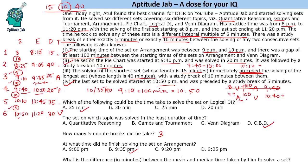What is the difference between the mean and the median time taken by him to solve a set? Now mean time if you calculate, this is 15 plus 40 is 55, 55 plus 45 is 100, 165 divided by 6 that is 27.5. That is the mean time. For median, we will arrange them in ascending order. That is 15, 20, 25, then 30, 35 and 40. So median is the average of these two. That is 27.5. So mean is equal to median. Hence the difference is 0.